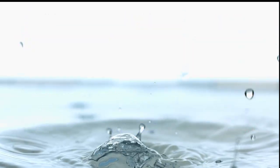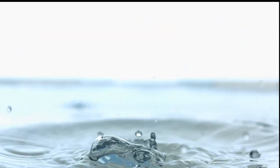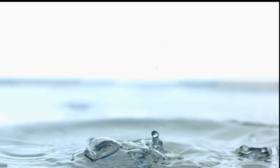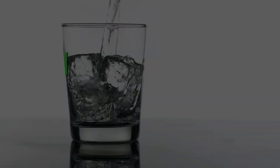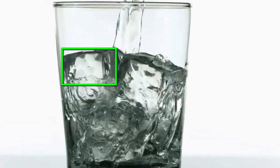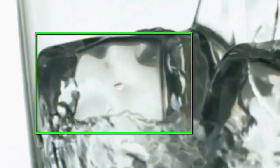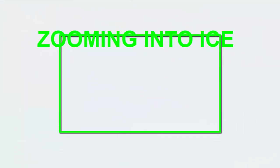Maybe we can understand why states have different properties if we zoom in to see what their molecules are doing. We'll start with solid ice and we need to magnify it a billion times. Each green rectangle is a hundredth of the size of the one before it, so four zooms will magnify ice enough to see its molecules.